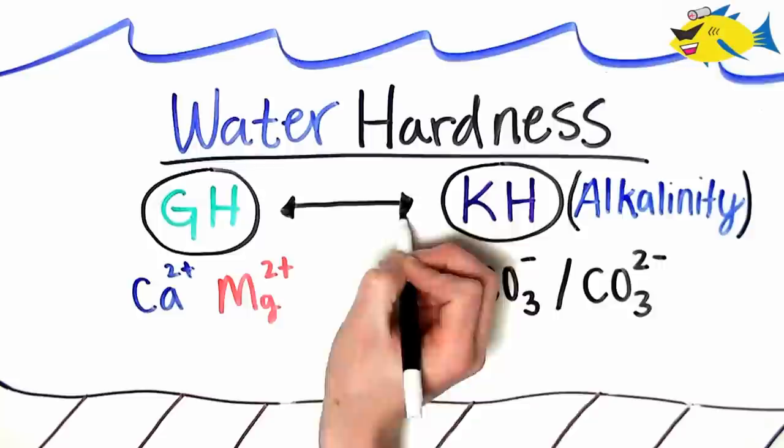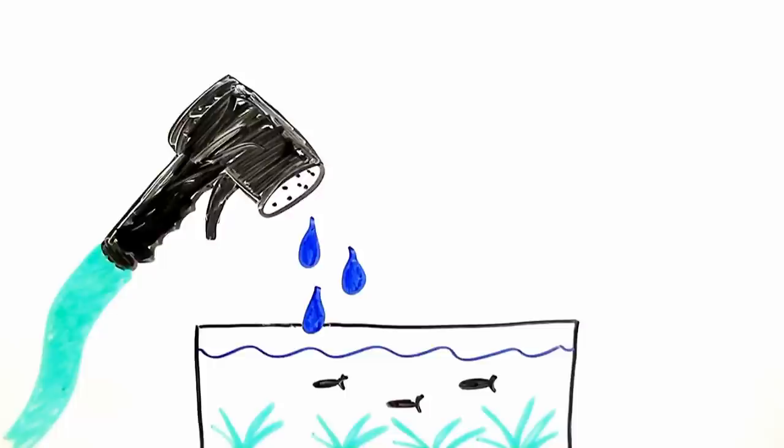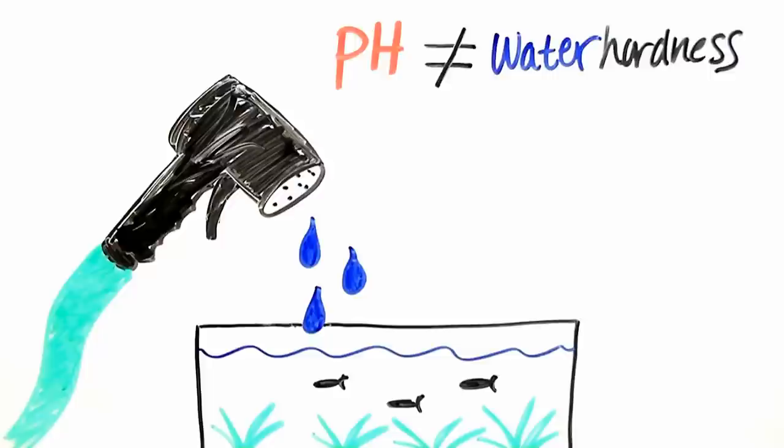meaning that if GH is high, so is KH and pH, and vice versa. However, this isn't always the case with tap water. This is why we can't use pH alone to determine whether our water is hard or soft. Using test kits is always the best method.